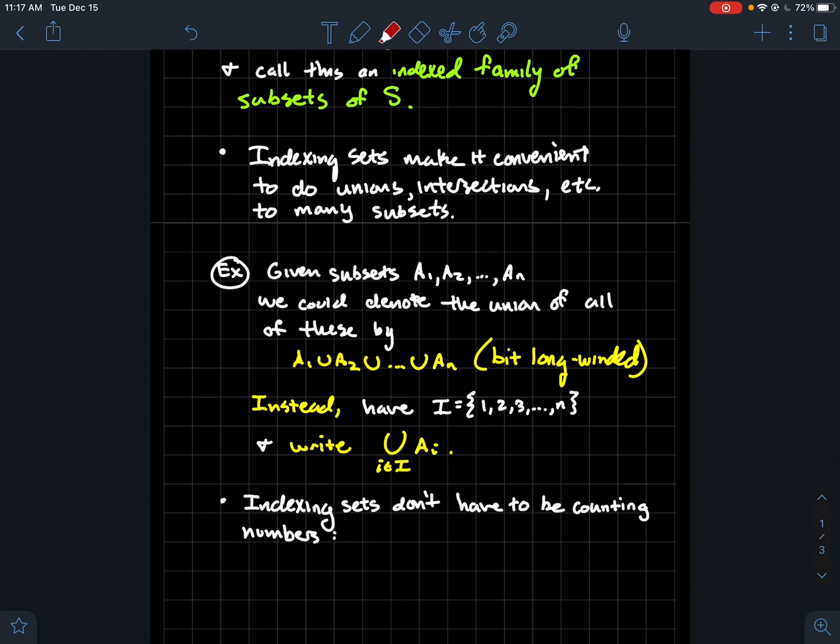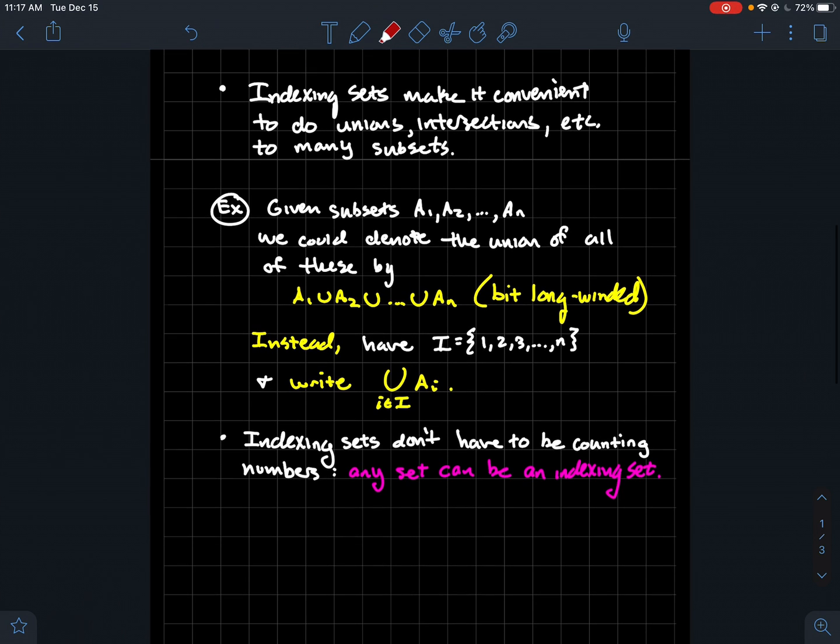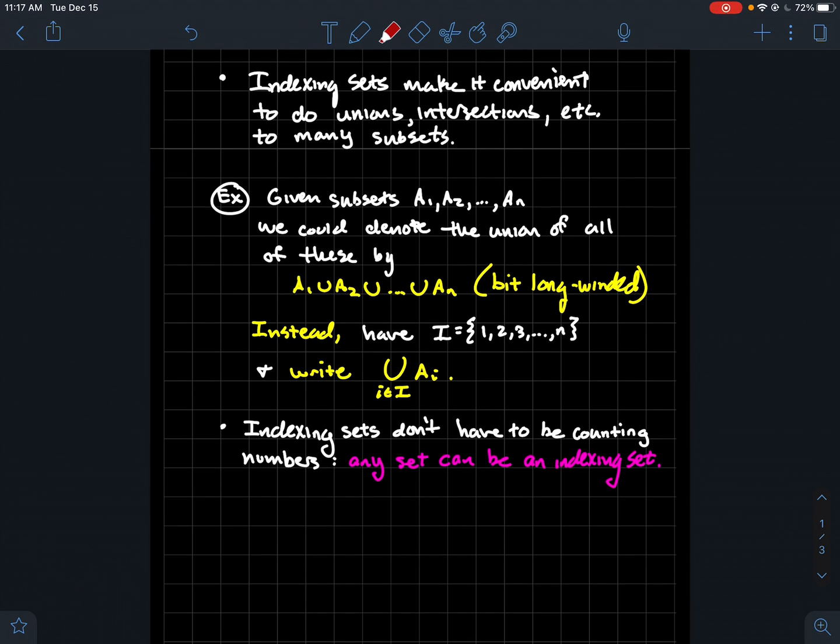Now, indexing sets don't have to be counting numbers. In some way, they're the ones we might run into most often when we're actually doing some kind of math in introductory classes. But you'll see as you go further in math that you could have different types of indexing sets. Generally any set can really be an indexing set. There's no rhyme or reason for why we'll call this an indexing set versus another thing. It all really just depends on what you're doing.